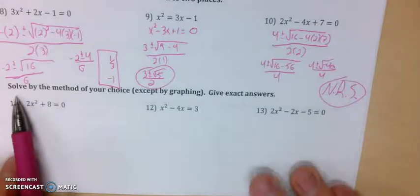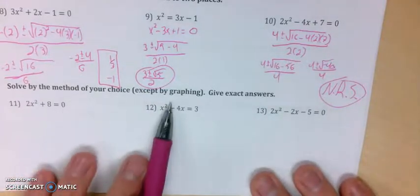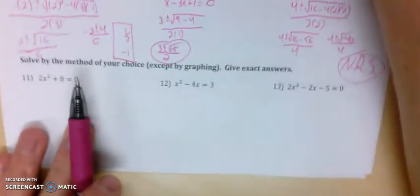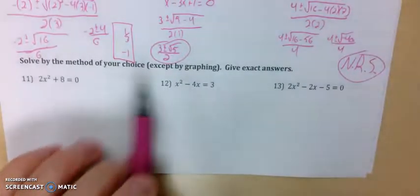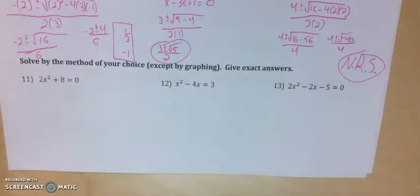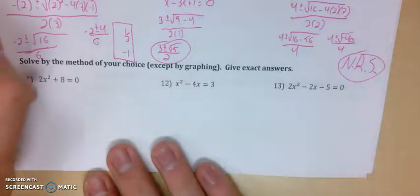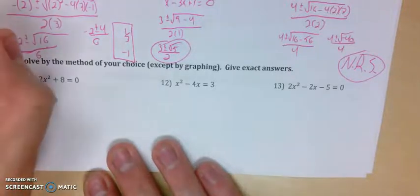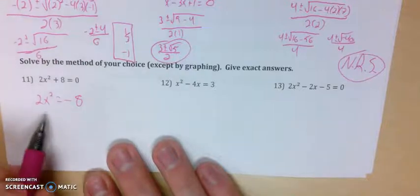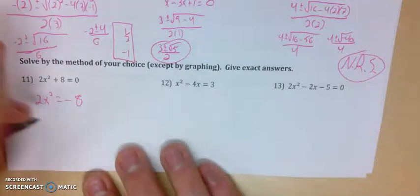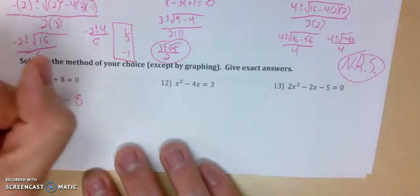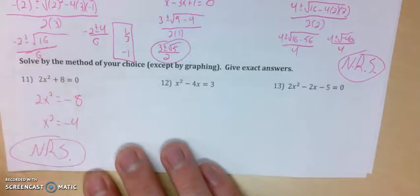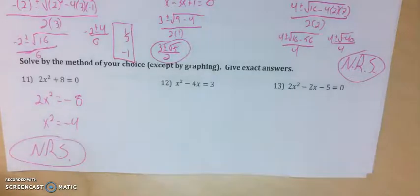For 11, 12, and 13, any method except graphing is acceptable. For number 11, x only shows up once, so I move the 8 to the other side: 2x squared equals negative 8. Dividing by 2 gives x squared equals negative 4. Trying to take the square root of each side — we can't take the square root of a negative — so no real solutions.